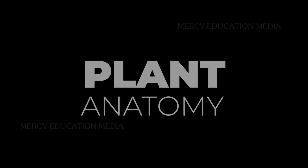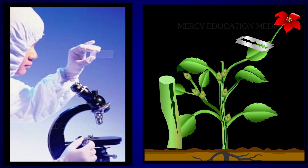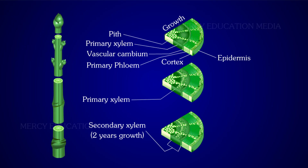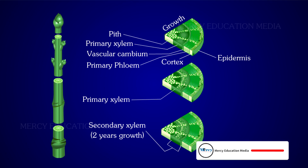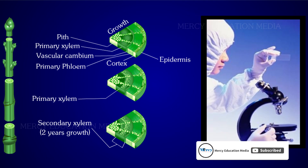Plant Anatomy. 'Ana' means 'under' and 'tami' means 'to cut.' Plant anatomy is the study of internal structure and organization of plants, especially of their parts, by means of dissection and microscopic examination.